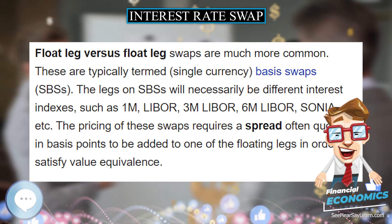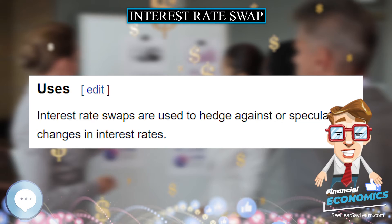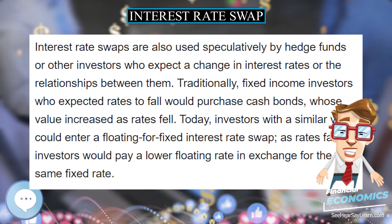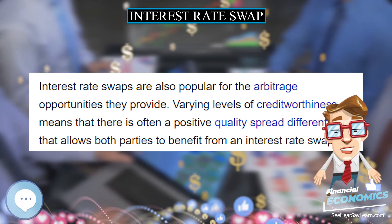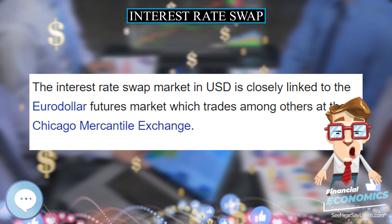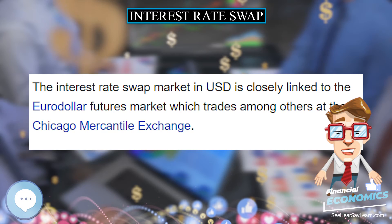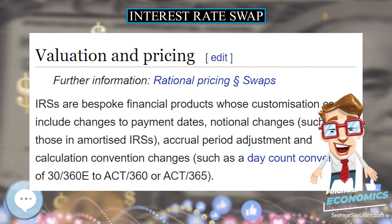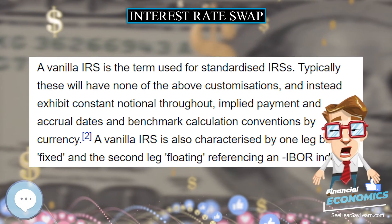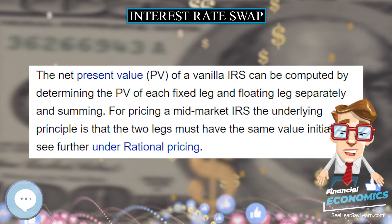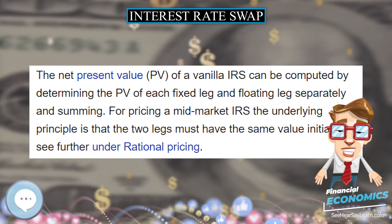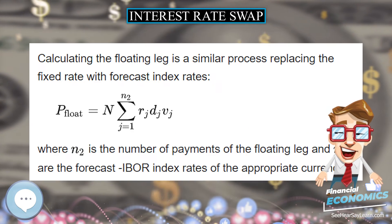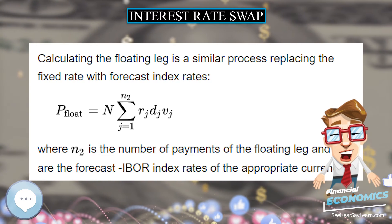ICE Swap Rate replaced the rate formerly known as ISDAFIX in 2015. Swap rate benchmark rates are calculated using eligible prices and volumes for specified interest rate derivative products. The prices are provided by trading venues in accordance with a waterfall methodology. The first level of the waterfall — Level 1 — uses eligible, executable prices and volumes provided by regulated electronic trading venues. Multiple randomized snapshots of market data are taken during a short window before calculation. This enhances the benchmark's robustness and reliability by protecting against attempted manipulation and temporary aberrations in the underlying market.